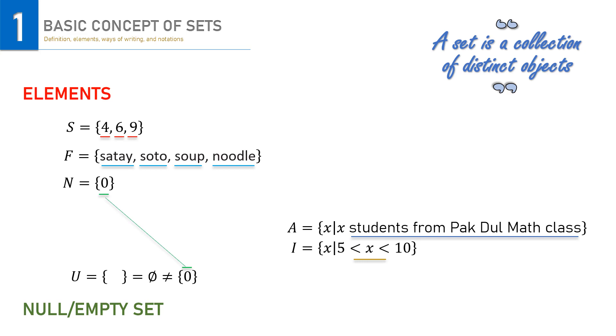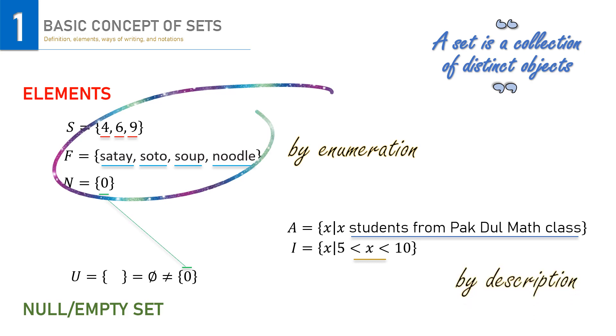We may write sets by enumeration, just like in our first three sets here. We just put all the elements inside our set, but in other circumstances, enumeration becomes difficult. In such a case, we may write set by description. Set A and I clearly show the way of writing set by description.